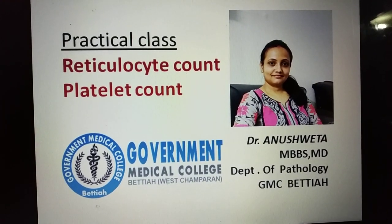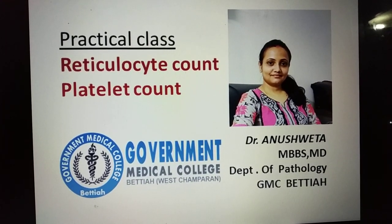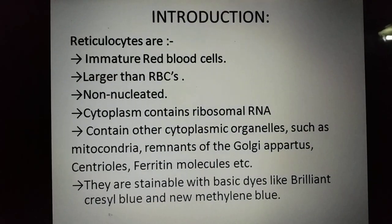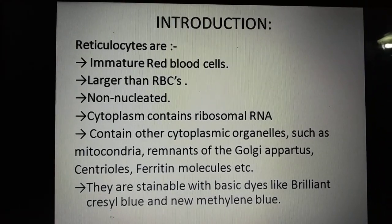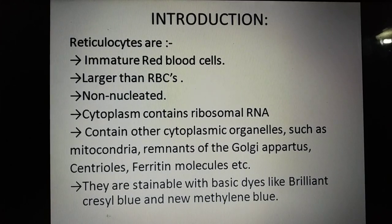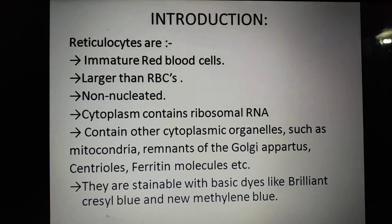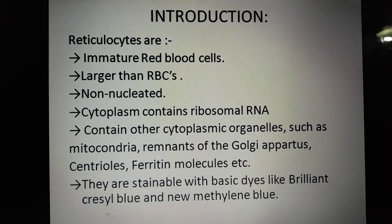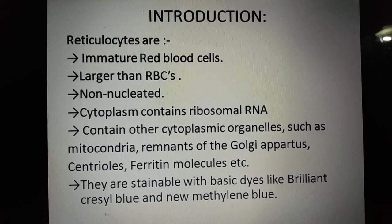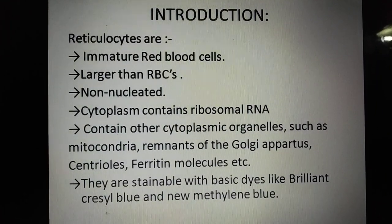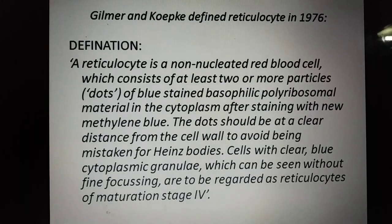Good afternoon. In today's practical class we learn about reticulocyte count and platelet count. Reticulocytes are actually the immature red blood cells. In size they are larger than the RBC, but they are non-nucleated and their cytoplasm contains ribosomal RNA and other cytoplasmic organelles like mitochondria, remnants of Golgi apparatus, centrioles, ferritin molecules, etc. Reticulocytes are stainable with basic dyes like brilliant cresyl blue and new methylene blue.